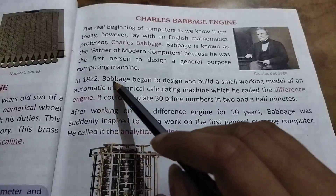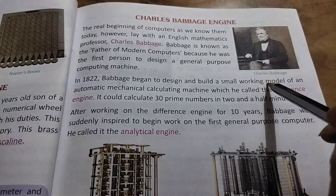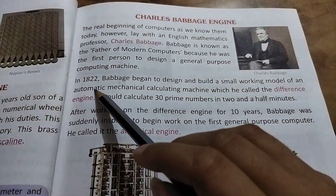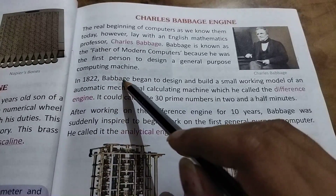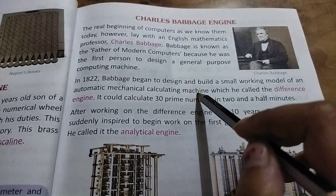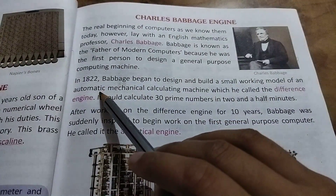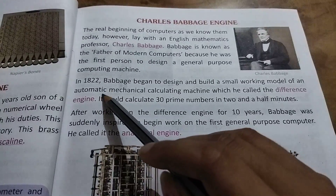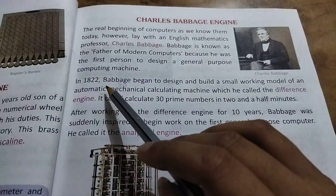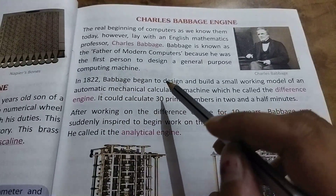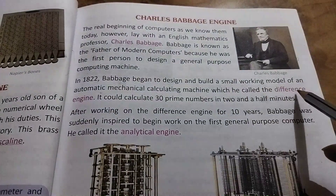In 1822, Babbage began to design and build a small working model of an automatic mechanical calculating machine. Automatic means that the machine itself works — this machine worked through the Difference Engine.